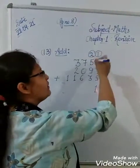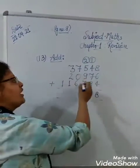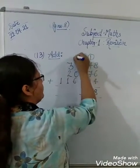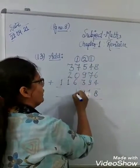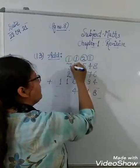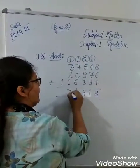Then 5 and 2 is 7, 7 and 9 is 16, and 3 is 19. Write 9, carry 1. 10 and 8 is 18, 6 and 4 is 10. Write 0, carry 1. Then 3, 4, 5, 6, 7, and here it is 4.